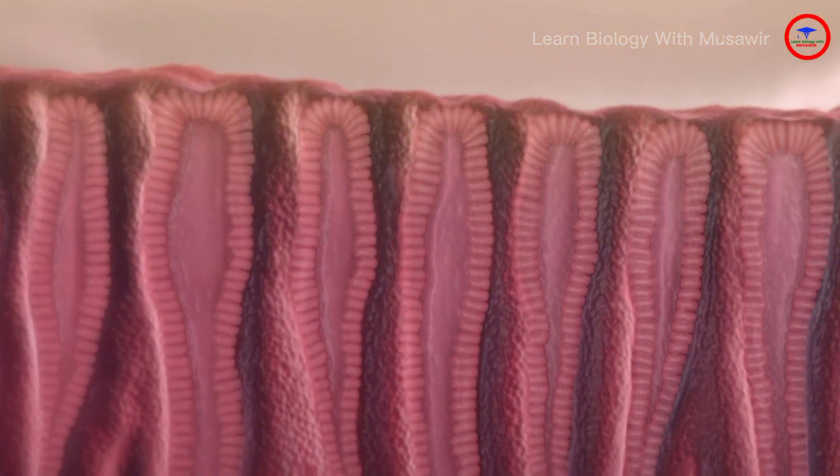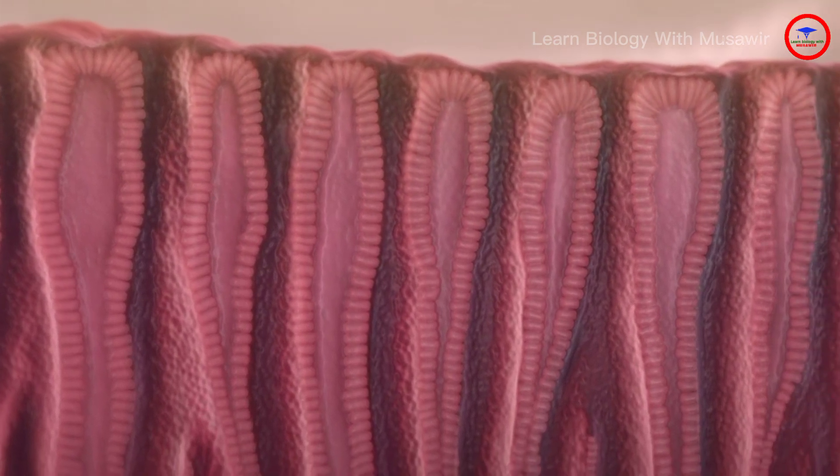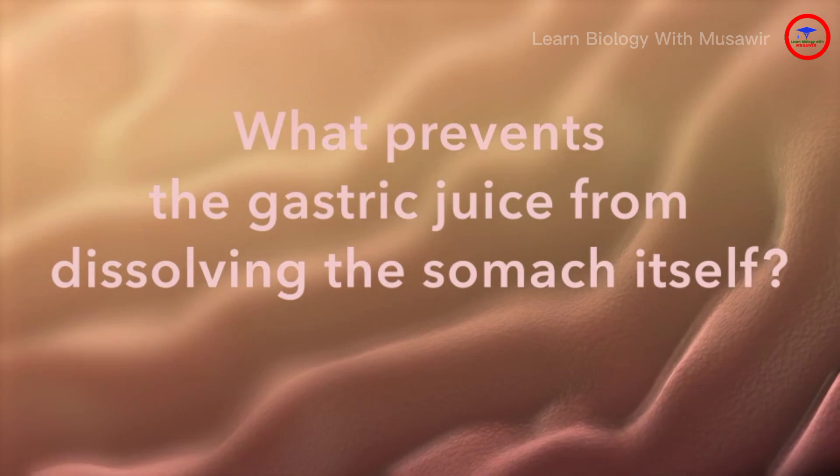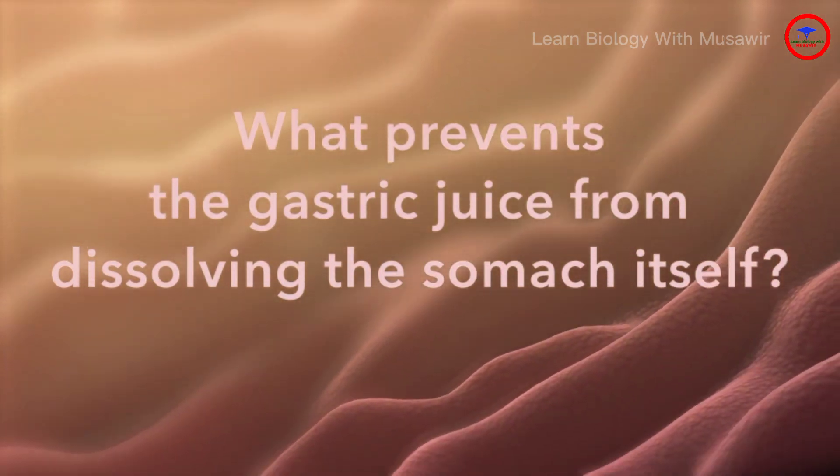If the components of highly corrosive gastric juice are secreted by cells within the stomach lining, what prevents the gastric juice from dissolving the stomach itself?